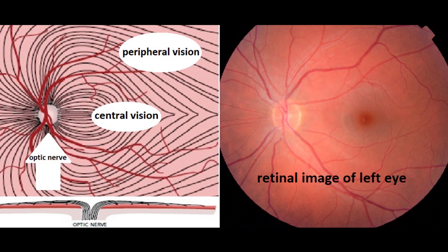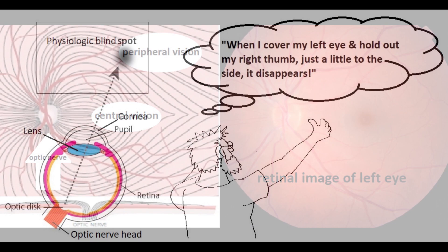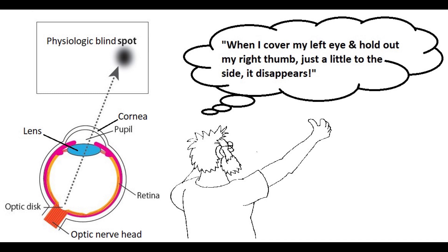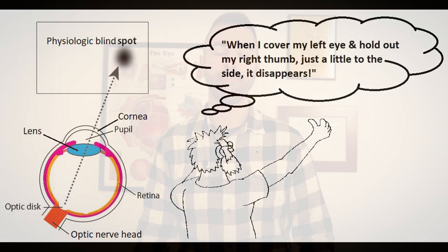Looking at the optic nerve head-on, it appears as an orange-yellowish colored donut, and where it enters the eye, we have what we refer to as the physiologic blind spot, 15 degrees temporal to our fixation. We never notice this blind spot because we usually have both eyes open. When the optic nerve is affected by a disease, vision loss can be highly variable, ranging from patients being completely asymptomatic and having 20-20 vision, to no light perception and complete blindness.